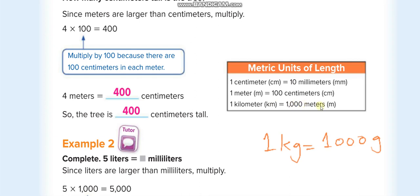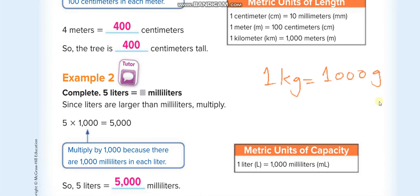When you are converting from centimeters, meters, or kilometers down to millimeters, centimeters, or meters, you will multiply by ten, one hundred, or one thousand. If you are converting from smaller units to a bigger unit, you will divide by ten, one hundred, or one thousand according to the units.